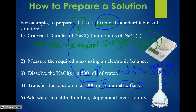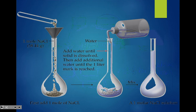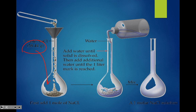Here's the visual: take 58.44 grams, put that in the volumetric flask, add about 500 mils of water halfway. Make sure it dissolves, then top it off with water to the line. Remember, you measure to the bottom of the meniscus. Then mix it all up, and there is your resulting solution.